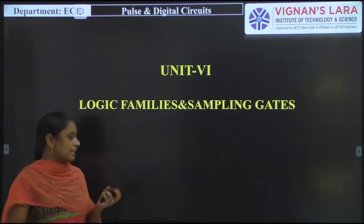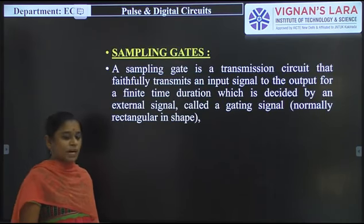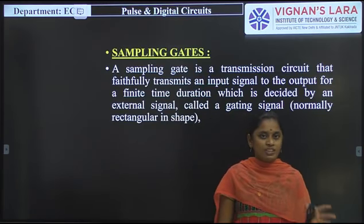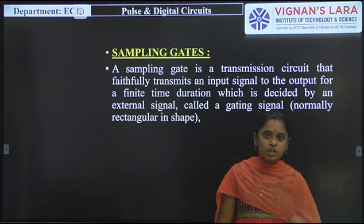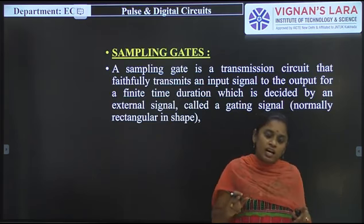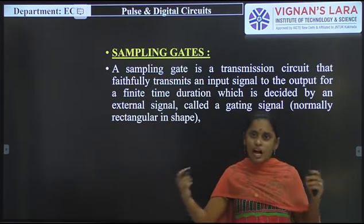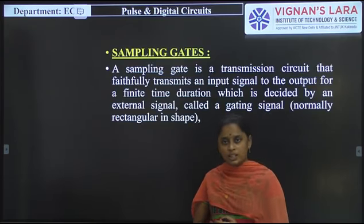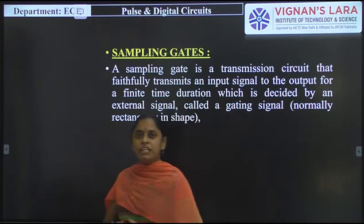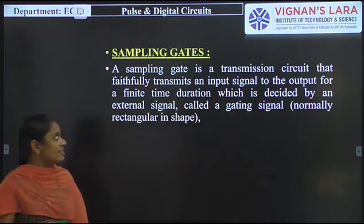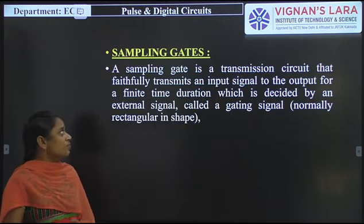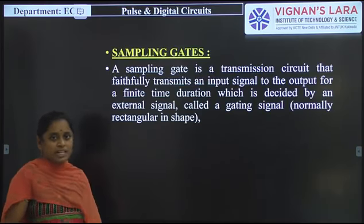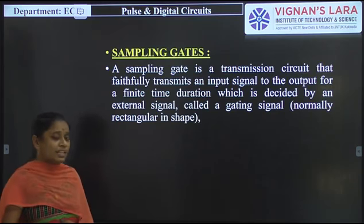So what is meant by a sampling gate? Sampling gates are known as transmission gates. Whatever input signal is given to the sampling gate, it produces an output signal — but only under a specific condition. A sampling gate, or transmission gate, faithfully transmits an input signal to the output for a finite time duration.